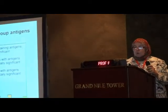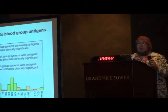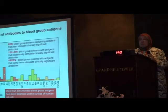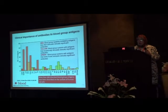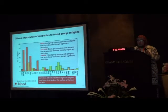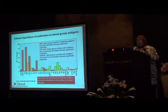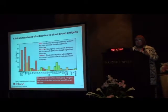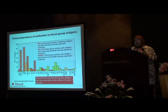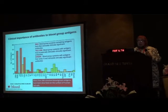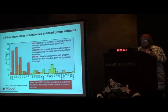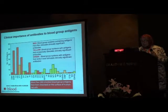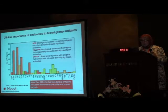Those in orange or red are associated with significant antibodies. They include the ABO, the MNS — which is more common in Asians — the RH system, the Kell system, the Duffy, as well as others.